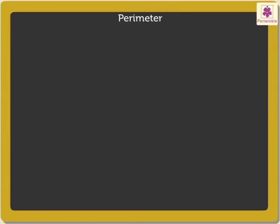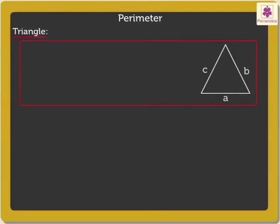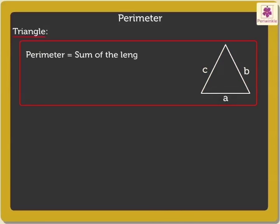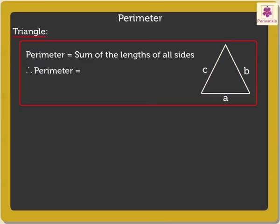Let's start with the triangle. A triangle has three sides: side A, side B, and side C. To find the perimeter of a triangle, we add the lengths of all its sides. Thus, perimeter of a triangle is equal to A plus B plus C.